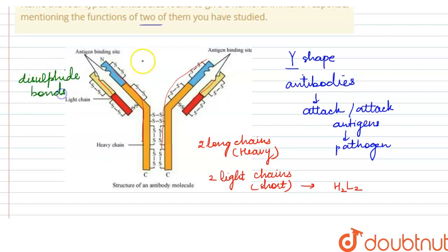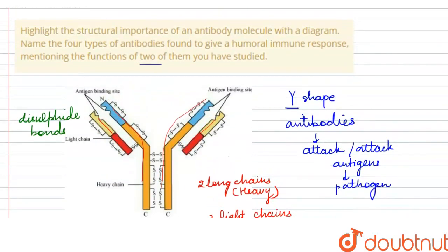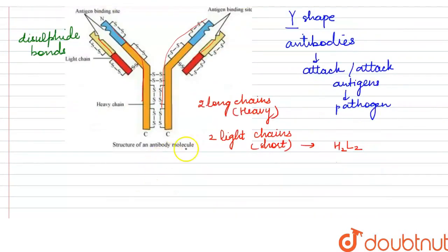The whole structure remains compacted with the help of disulfide bonds. This was the diagram of the antibody. Now let's talk about four types of antibodies in humoral response. Humoral immune response means when antibodies are produced against any pathogen.